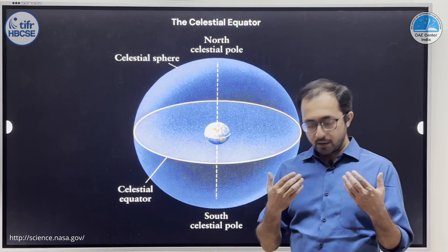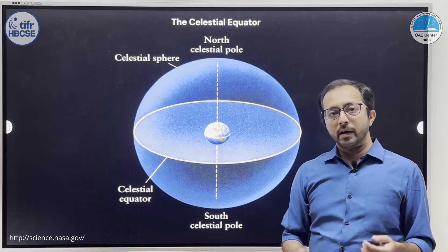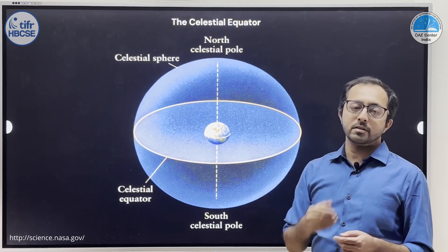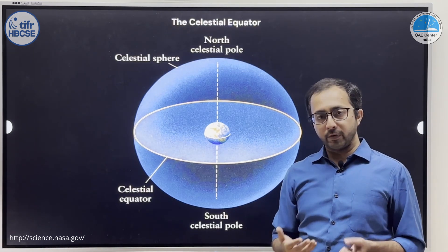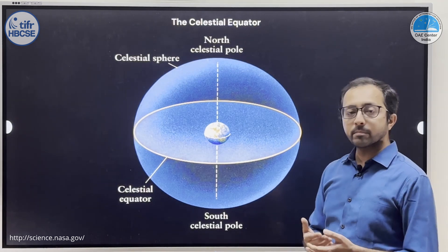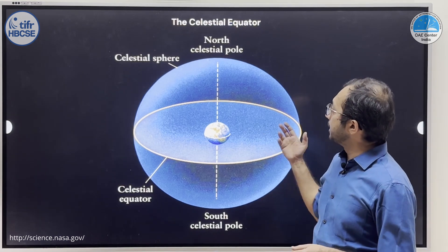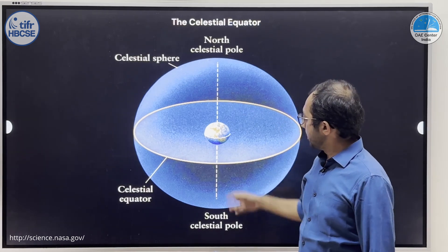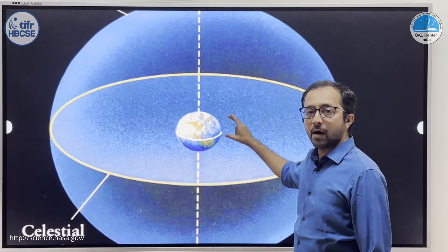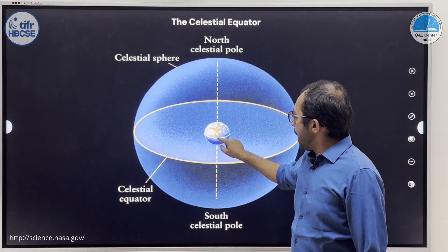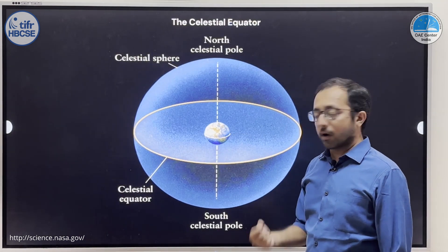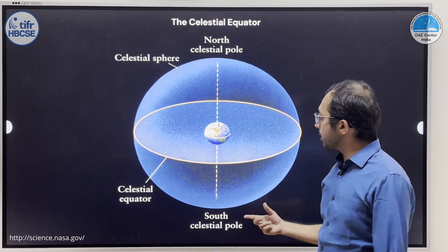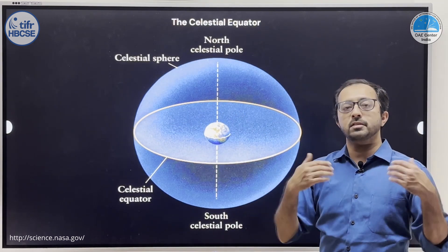Now let us define a few more things which will help us to identify and define the position of all these objects — that is the stars, the planets, the moon — on this celestial sphere. For that, we will first define something called as the celestial equator. This blue sphere is the celestial sphere, at the centre of which we have earth. You can see the white equator of earth. When you expand this circle on the celestial sphere, you see this yellow circle which is called as the celestial equator.